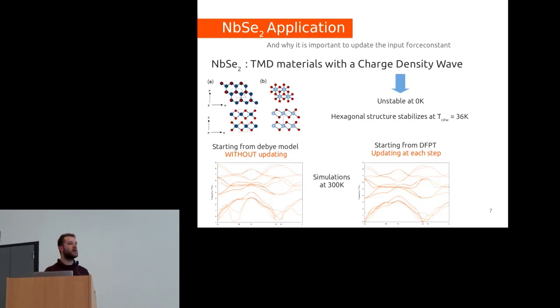I did two calculations. One I started from a Debye model, which is a really crude model to get force constants based only on the nature of the atoms. I didn't update the force constants throughout the process, and I calculated the same number of configurations in both cases, approximately 30 configurations. In the case where I didn't update the force constants, you can see we still see some unstable modes, which is not really physical because at 300K the structure should be stable.